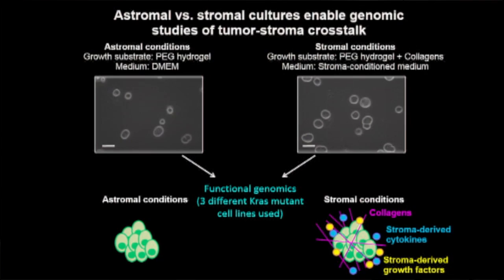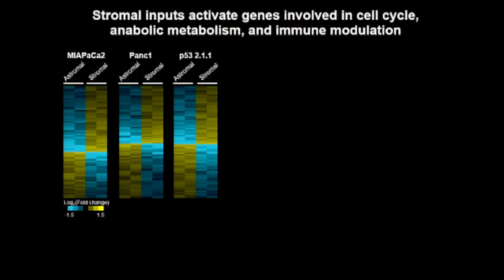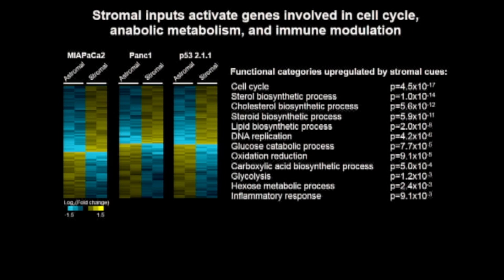Though these stromal cultures contain diverse signals from the tumor microenvironment, these are homotypic cultures easily amenable to functional genomics and metabolomics. To probe the effects of stromal inputs on pancreatic cancer cells, I put three different KRAS mutant pancreatic cancer cell lines into stromal and astromal conditions and analyzed gene expression by RNA-seq. The RNA-seq data showed that stromal cues significantly regulated gene expression in all three cell lines. Gene ontology analysis showed regulated genes implicated in the cell cycle, inflammatory or immune responses, and anabolic metabolism including biosynthesis of cholesterol and lipids.